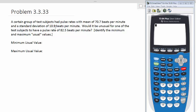And a standard deviation of 10.9. Would it be unusual for one of the test subjects to have a pulse rate of 82.5 beats per minute? And identify your minimum and maximum usual values.